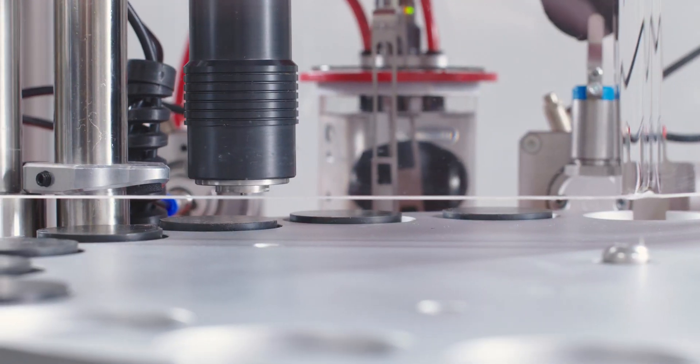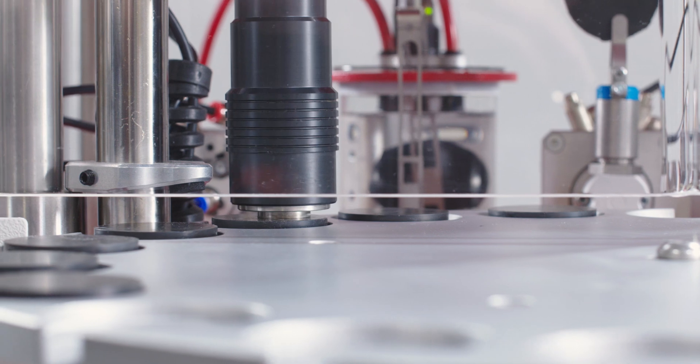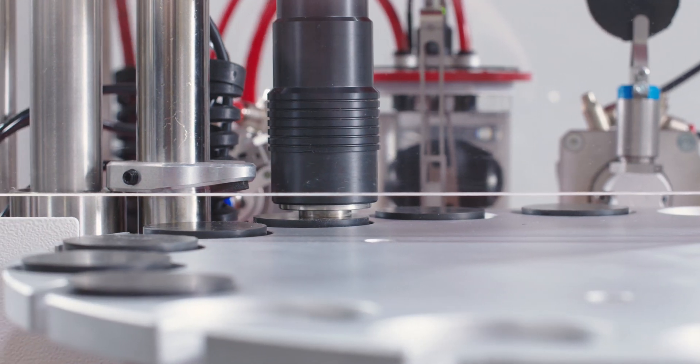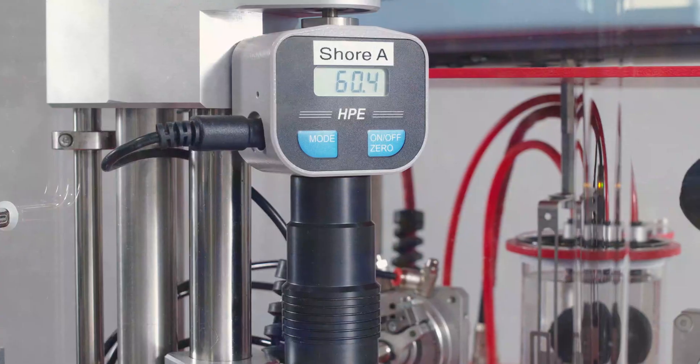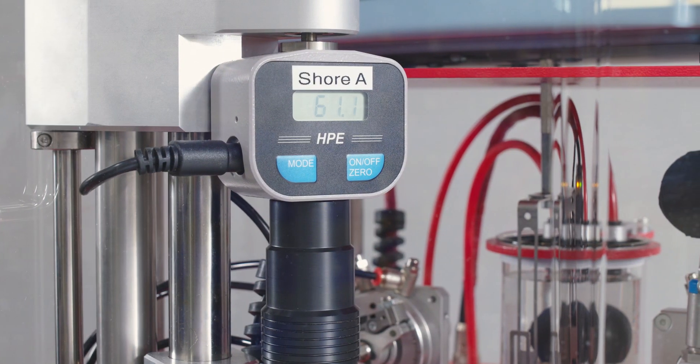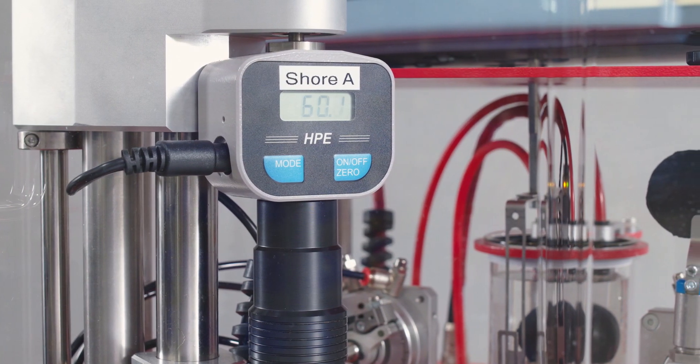For the first step in the sequence, hardness testing, the instrument's durometer head takes precise measurements on up to five points on the sample. Different indentation heads are available for various international standards, including Shore A, Shore D, and many more.